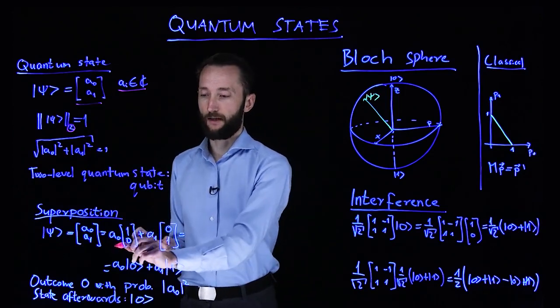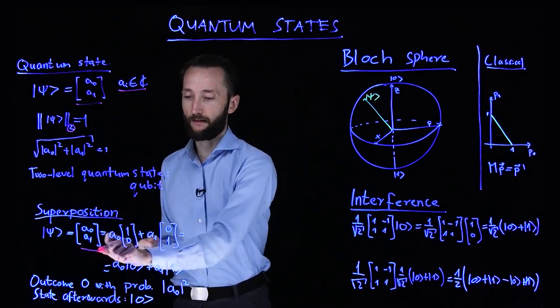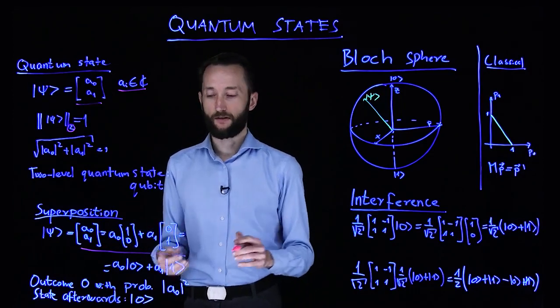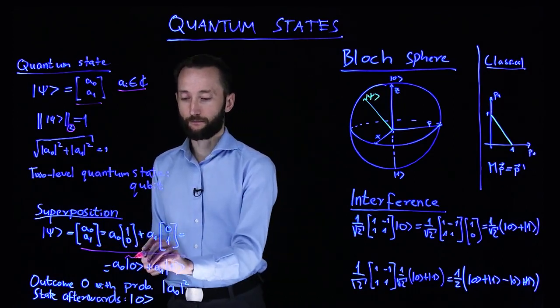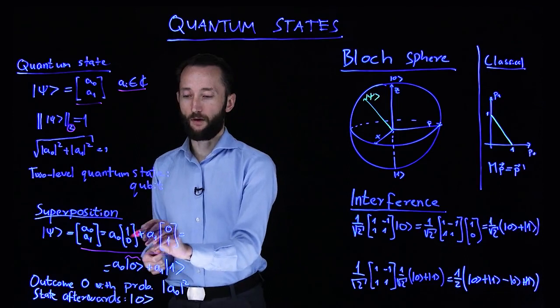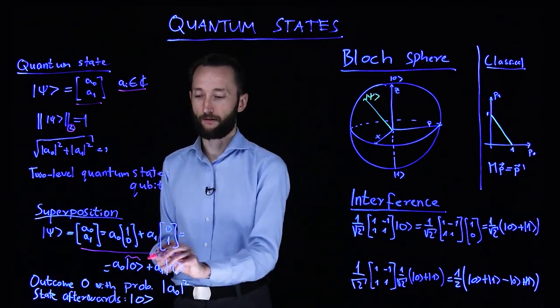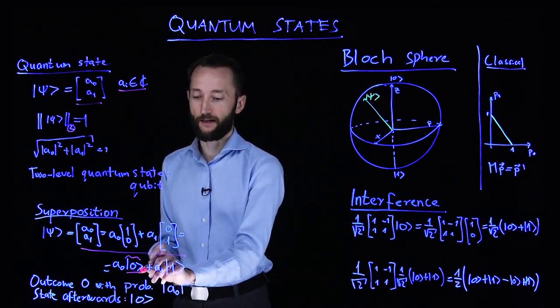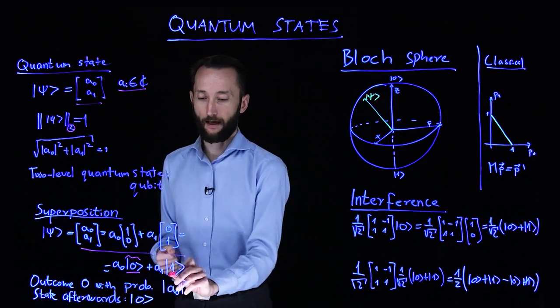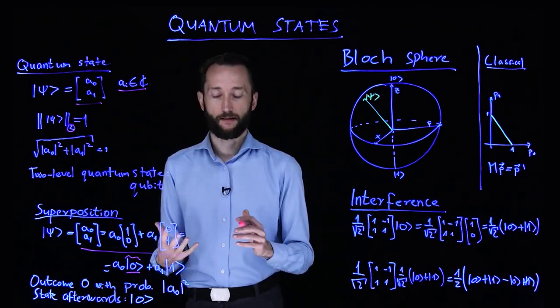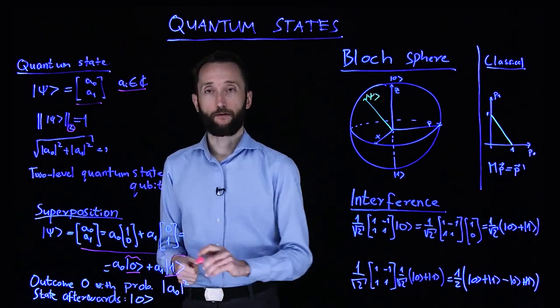So for instance, if we expand it in the canonical basis like this, then we can introduce a notation for the vectors. The [1,0] vector is called the zero ket, and the [0,1] vector, the second basis vector, is called the one ket.